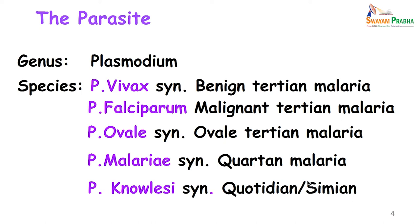The genus is Plasmodium and the most common species are Plasmodium vivax, falciparum, ovale, malariae, and the newer Plasmodium knowlesi. Plasmodium vivax is synonymous with benign tertian malaria, falciparum with malignant tertian malaria, ovale with ovale tertian malaria, P. malariae with quartan malaria, and knowlesi with quotidian or simian malaria.